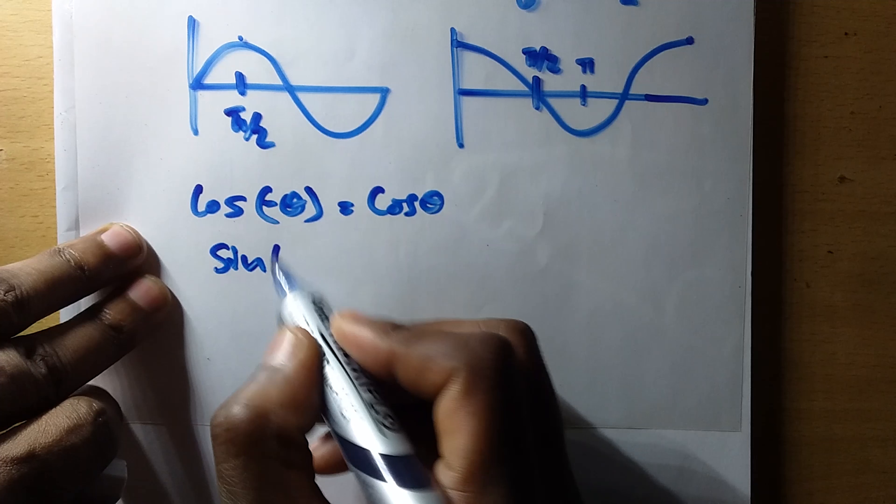We've now found all four roots: c₀ = √3 - i, c₁ = 1 + i√3, c₂ = -√3 + i, and c₃ = -1 - i√3. Please hit the like button, subscribe, and share the link to this video. Thank you very much guys, see you on the next one.